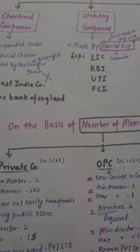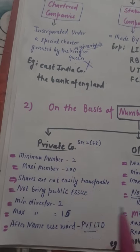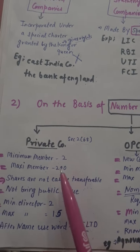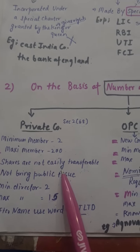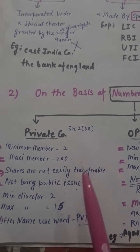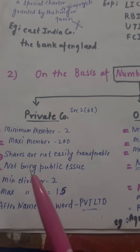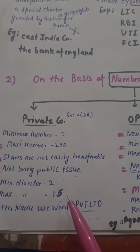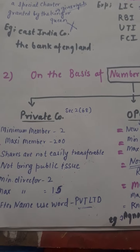Let's look at private company on the basis of number of members. Minimum number of members is 2, maximum number of members is 200. The shares are not easily transferable. A private company cannot bring public issues. Minimum directors are 2 and maximum directors are 15.